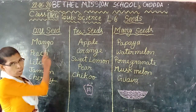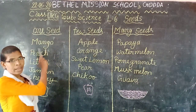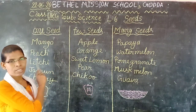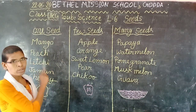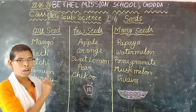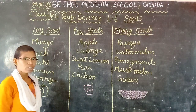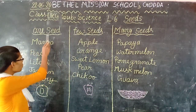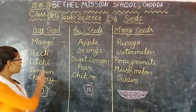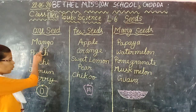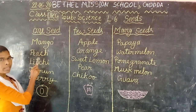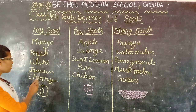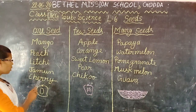Children, most of the time we have eaten micro. Have you noticed the micro fruit seeds? How many seeds are there in micro? Only one seed. So we are going to learn the one-seed fruit's names. Here they are: micro, peach, litchi, jamun, cherry.